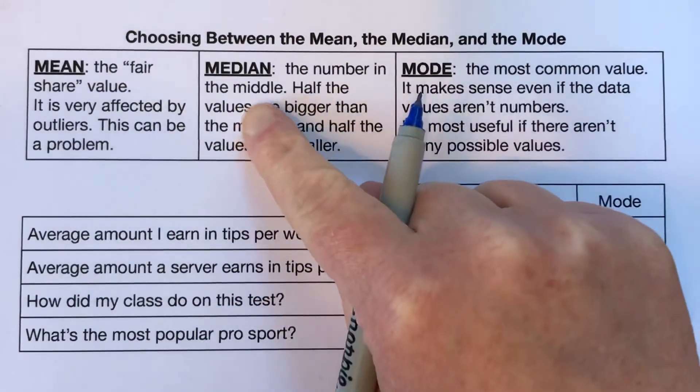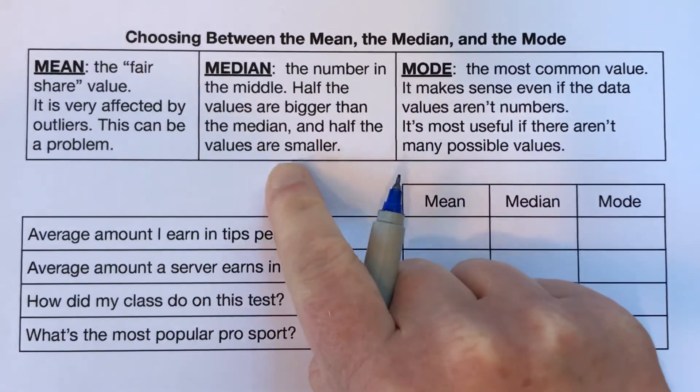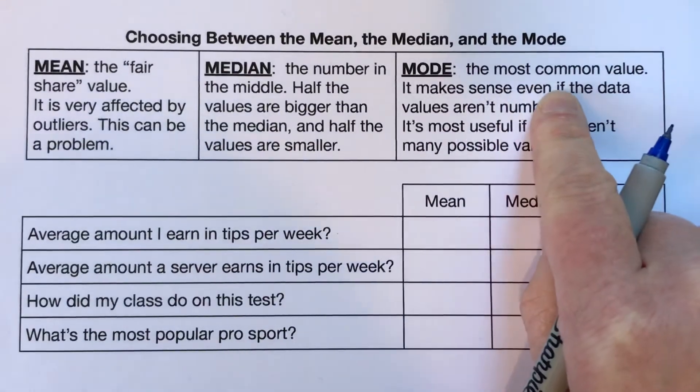So the median is of course the number that's in the middle, and half the values are bigger than it, and half the values are smaller. And the mode is the most common value.